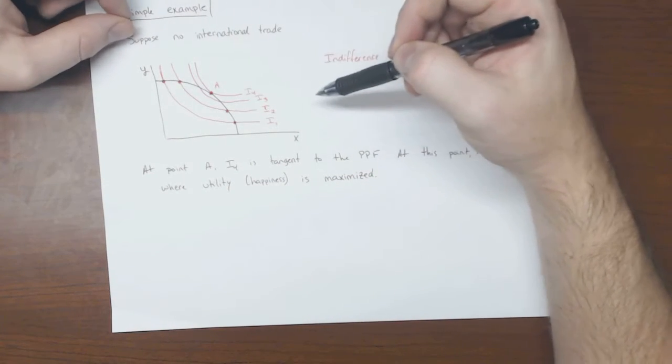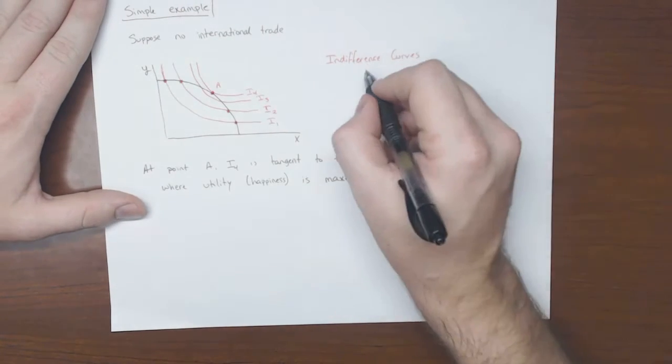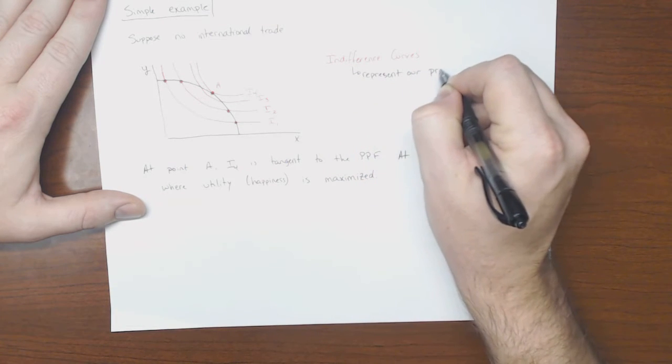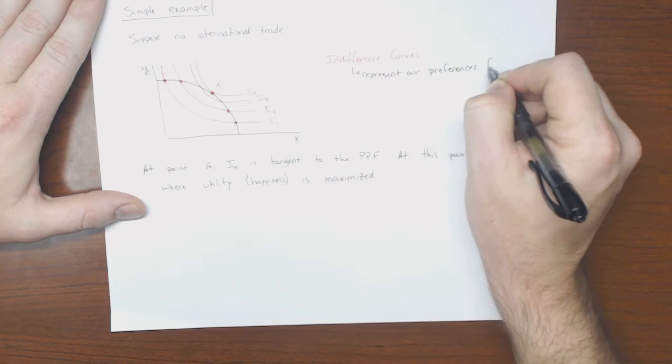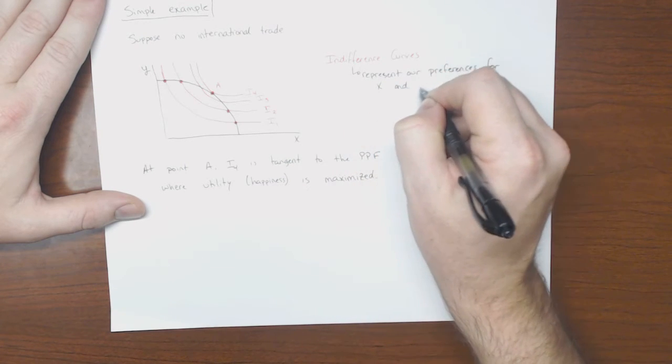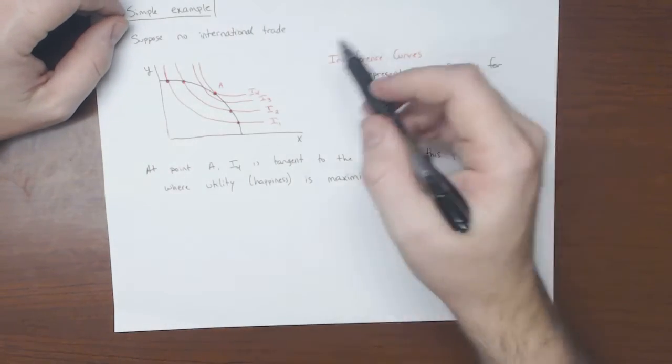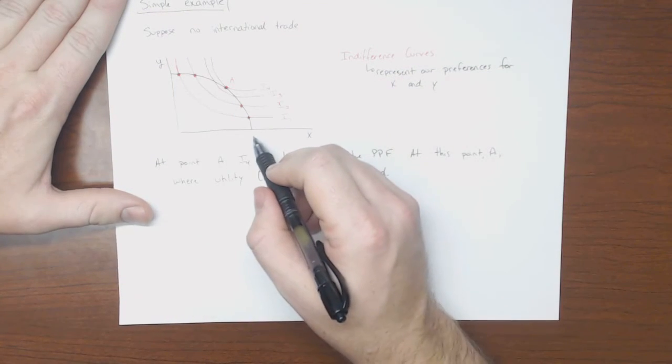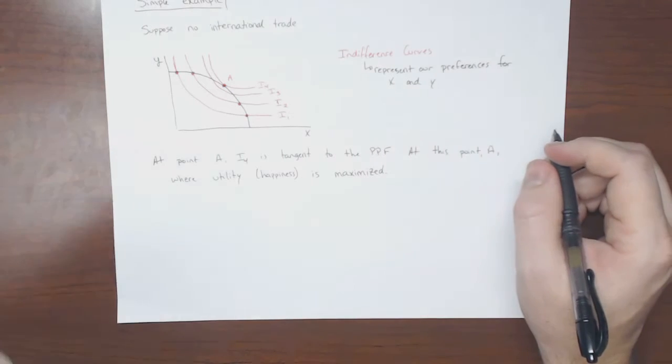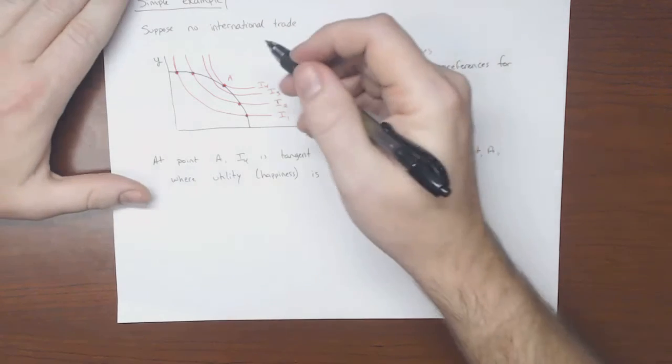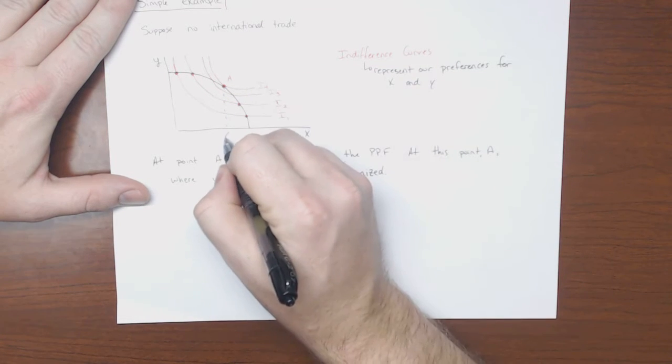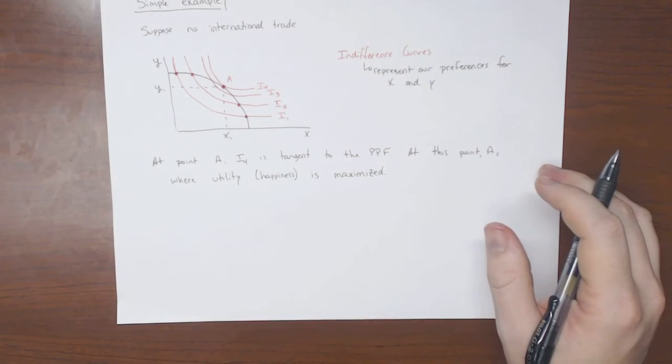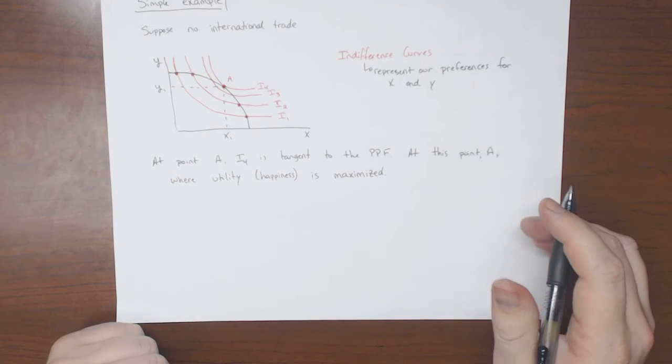So given these indifference curves, which represent our preferences for x and y, it's at this point A where, given our preferences for x and y and our productive abilities for x and y, that we maximize the total happiness that we would get. And so we would expect the U.S. to produce x1, y1. And that's how we would determine this.